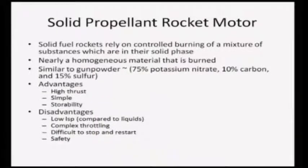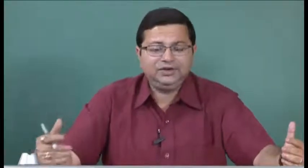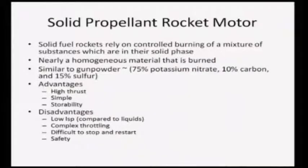The second disadvantage is throttling - changing the thrust on demand is fairly complex. It has to be preprogrammed so you can get thrust variation as you go along, but online throttling is very difficult because the solid grain is burning, and changing the burning rate in flight is almost impossible. There are advanced rockets where specific materials are embedded which can be triggered at will to give some throttling, but this is very complex.